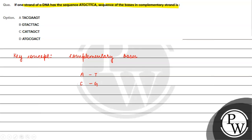So in the complementary strand, let me tell you what will happen. The first base is A — its complementary base is T. T complementary base is A. G complementary base is C. C complementary base is G. T complementary base is A. T complementary base is A. C complementary base is G. A complementary base is T.